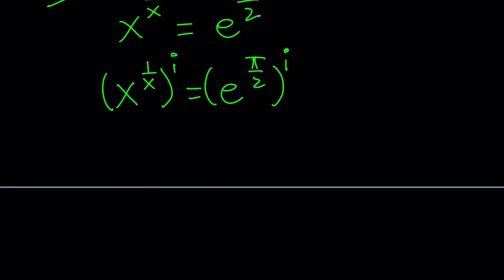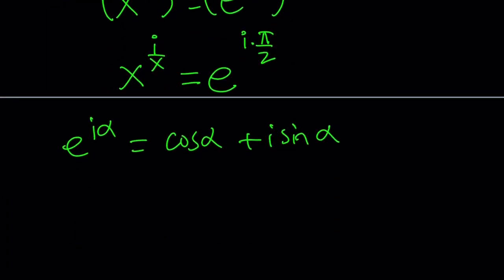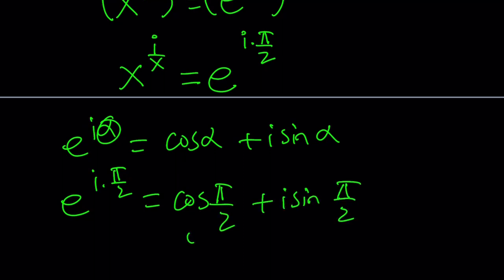Let's raise both sides to the power i, right? It's not even real, but that's okay. Then we get x to the power i over x on the left-hand side. And on the right-hand side, we get e to the power i times pi over 2. So this is the part that is interesting because we said e to the power i alpha is cosine alpha plus i sine alpha. And then, we can go ahead and replace alpha with pi over 2. And this gives us, again, cosine pi over 2 plus i sine pi over 2. This is 0, this is 1, so this is i.